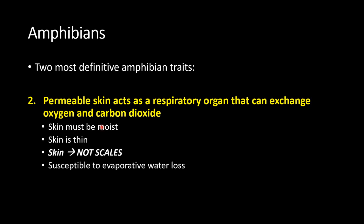The second definitive trait of amphibians is the presence of skin, not scales. Reptiles have skin covered with scales that helps prevent water loss; amphibians have thin, permeable skin. They lack scales, their skin needs to maintain a certain level of moisture, and they can actually use it as a respiratory organ — exchanging oxygen and carbon dioxide with the environment through their skin. This makes them susceptible to both dehydration and environmental pollutants through diffusion more than reptiles.